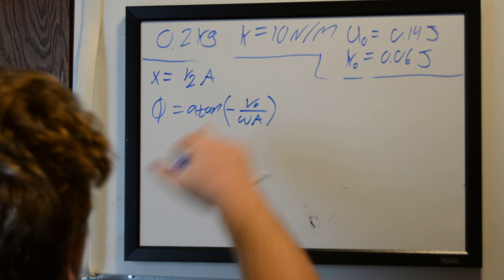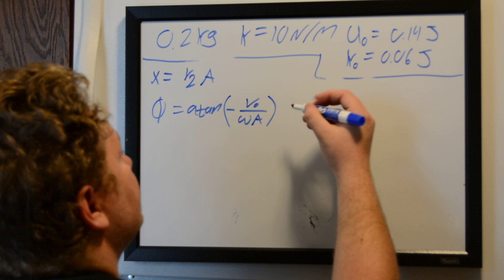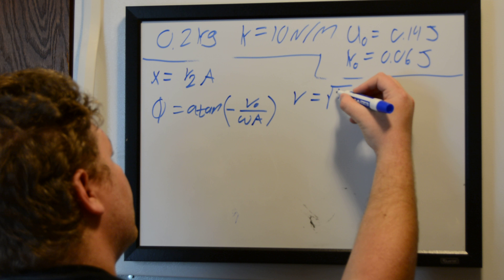So first we have just from equations in the book, we have that our velocity is equal to the square root of our spring constant over the mass times the amplitude.